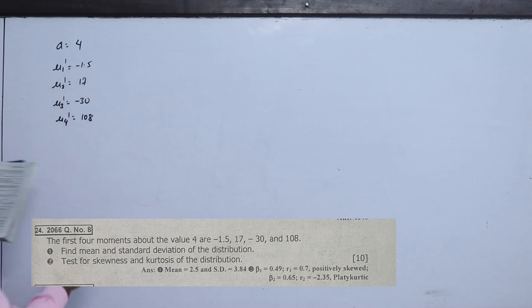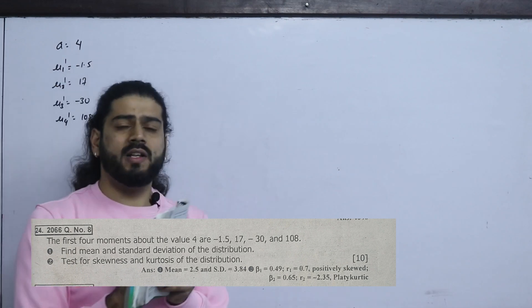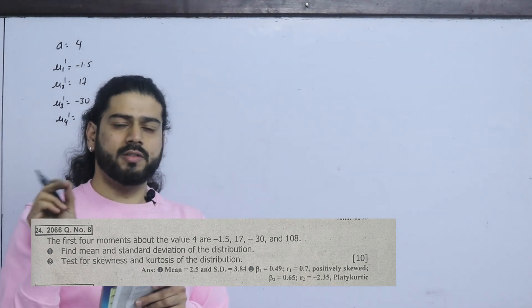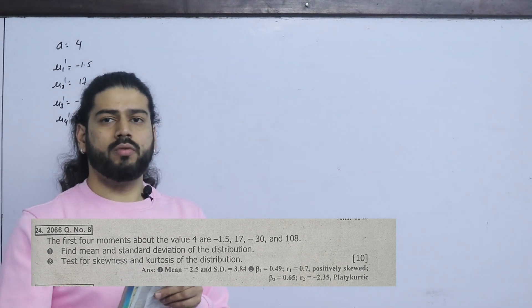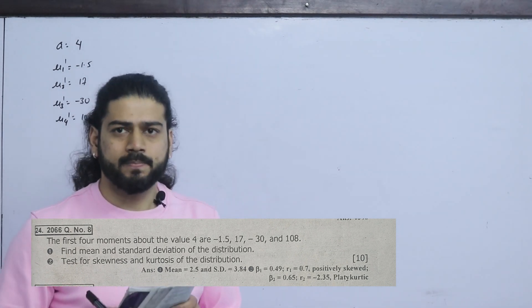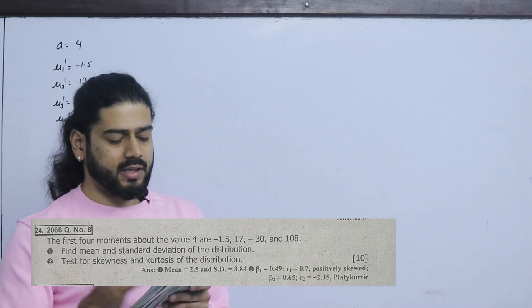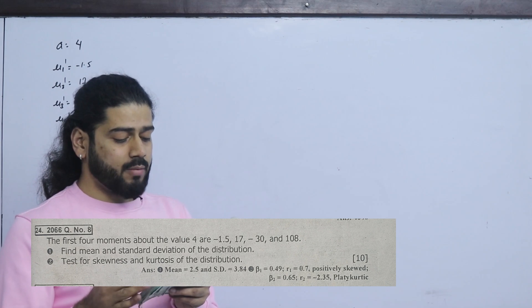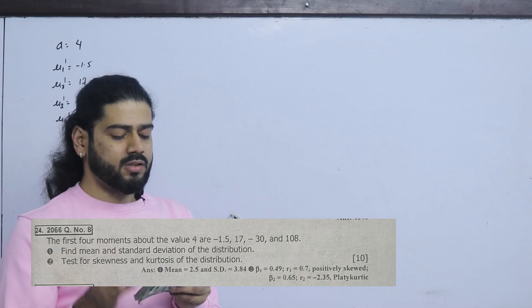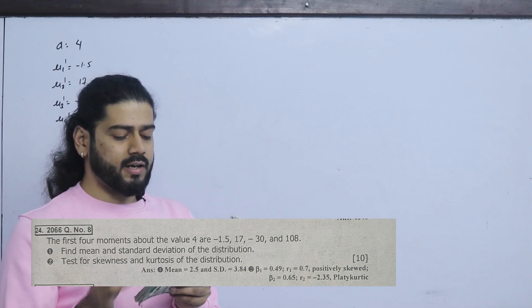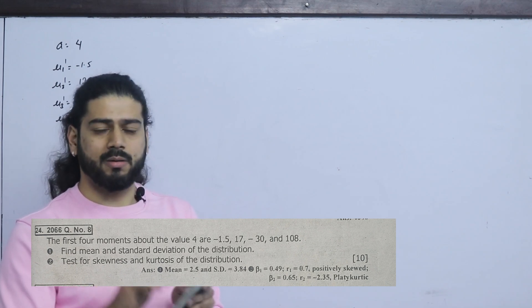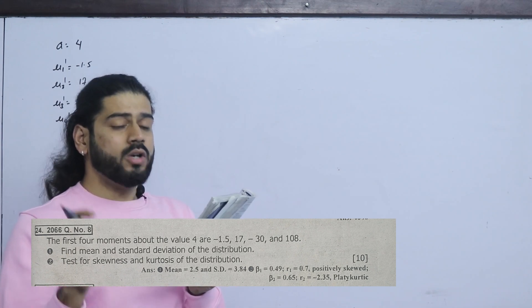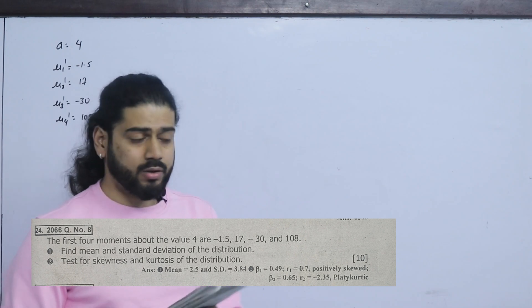These are the raw moments. The first central moment starts from 0 — it is always 0. If it starts from 0, then these are raw moments; the first 4 central moments start from 0.